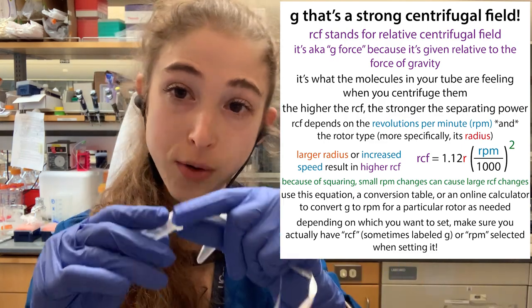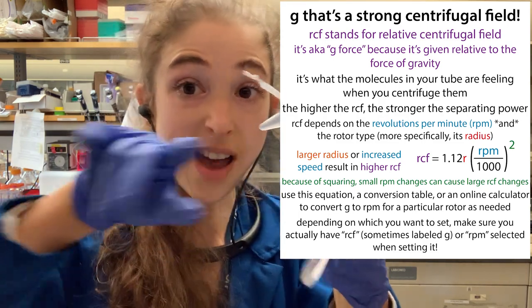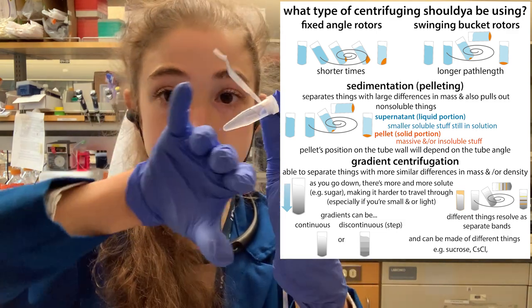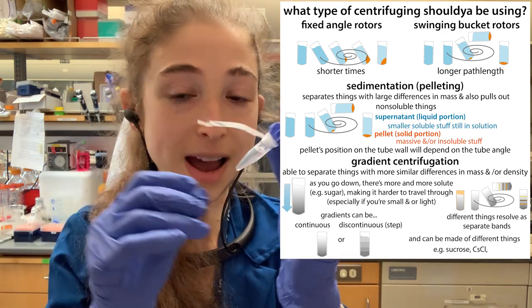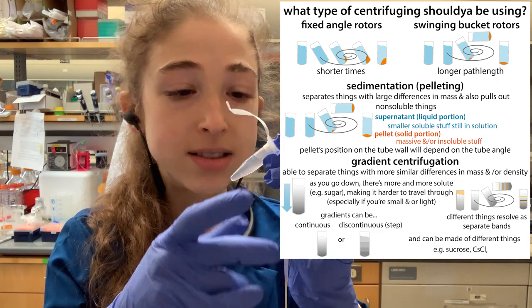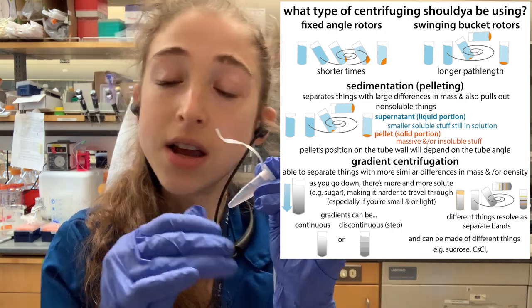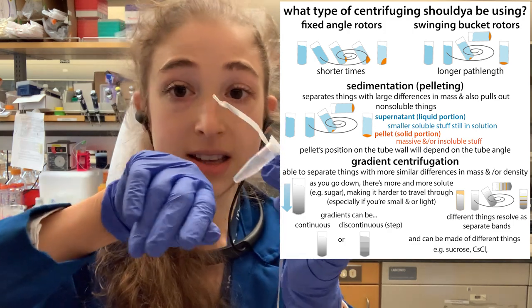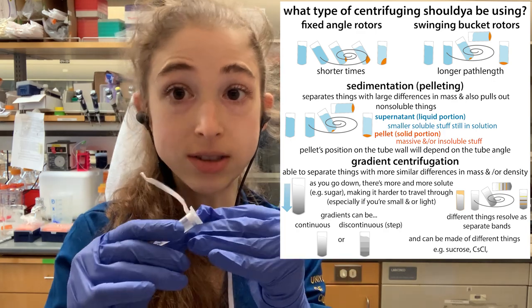RCF is 'relative' because it is relative to the force of gravity. So gravity g — sometimes we call it g-force, you'll see it like 'times g' or something like that. That's talking about the force that's going to be applied on the molecules in the tube, and this force is going to help push the heavier and more dense stuff so it travels faster and pellets out.